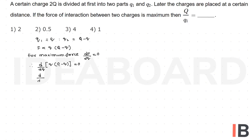This is d by dq of Q into q minus d by dq of q squared, which is equal to zero. This becomes Q minus 2q is equal to zero, and q is equal to Q by 2.